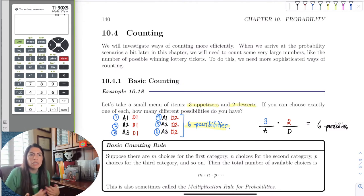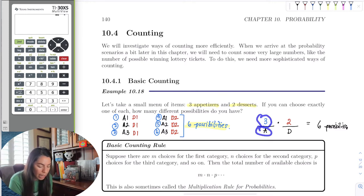So the first one is the multiplication rule. If we have a certain number of choices—we have three choices for appetizers, two choices for dessert—and n categories. We have two categories here. Then we can just multiply. So if I have three choices in one category and two choices in another category, then I could just multiply the choices.